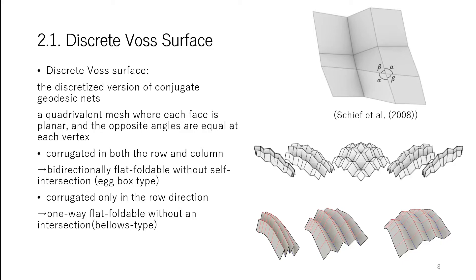Discrete Voss surfaces are quadrivalent meshes, where each face is planar, and the opposite angles are equal at each vertex. We consider the family of discrete Voss surfaces with corrugation. In other words, the mountain and valley creases are alternately repeated.